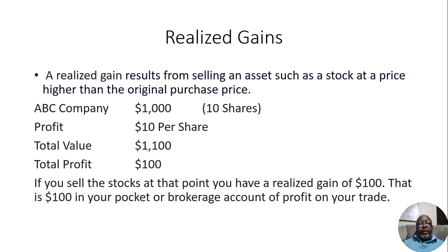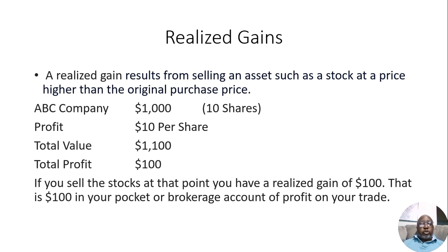Let me give an example so that will be understandable. We're going to use a fictitious company called ABC Company. ABC Company is $100 a share, and you bought 10 shares, meaning you bought $1,000 worth of ABC Company — 10 shares at $100 a share. Let's say that stock's price rose $10 per share, so your total stock value went up from $1,000 to $1,100, which means you have a total profit of $100.